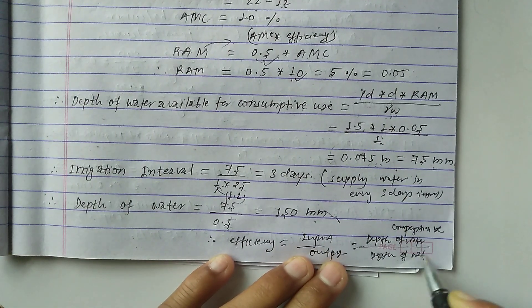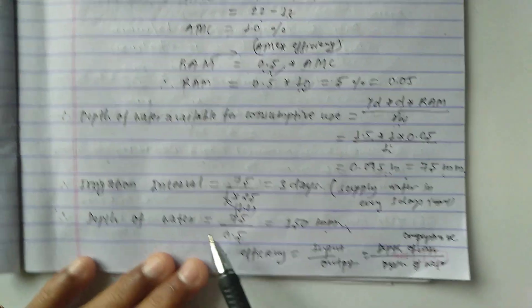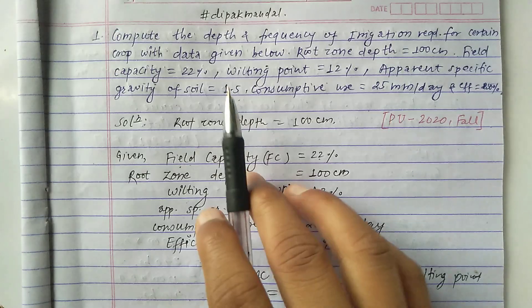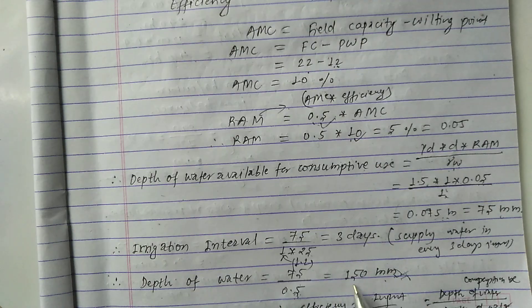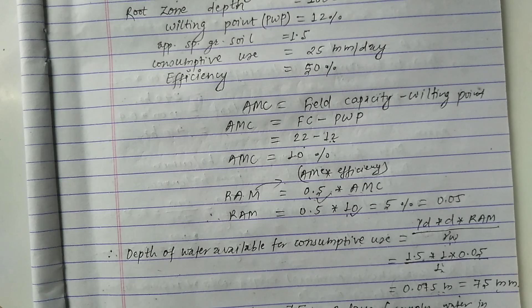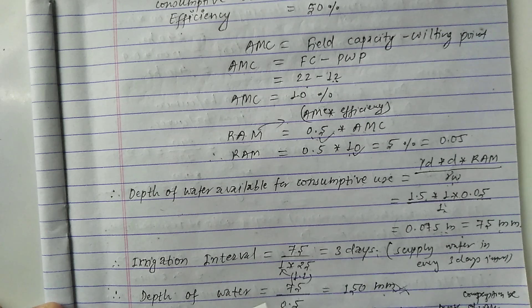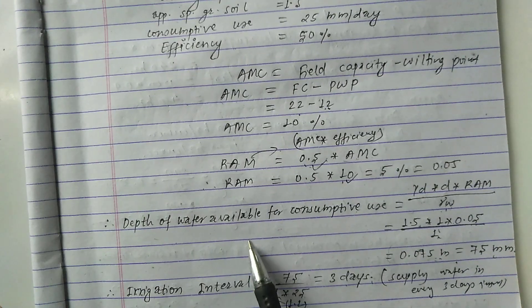Using this formula, the depth of water to be applied = 150 mm. So our final answers are: irrigation interval = 3 days, depth of water to be applied = 150 mm, and depth of water available for consumptive use = 75 mm.